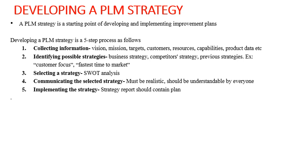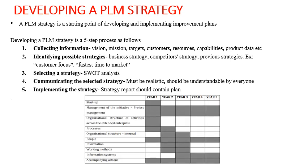The structure for the plan should follow the PLM framework, making it easier for managers and others to see how all issues are linked and will be addressed. The five-year plan will typically have items covering startup, management of the initiative, organizational structure of activities, processes, people, information, working methods, information systems, and accompanying actions.